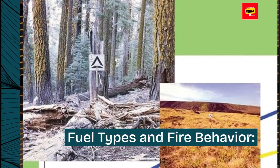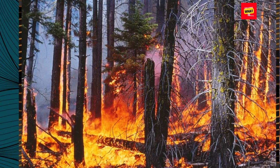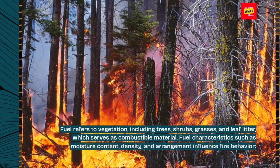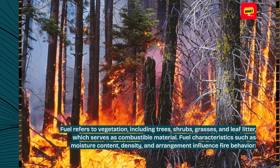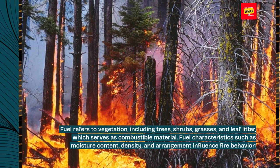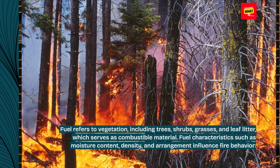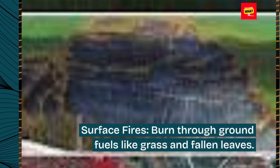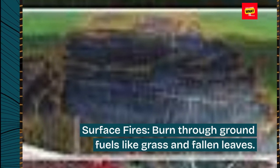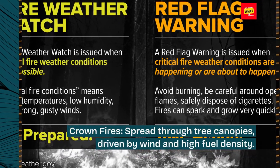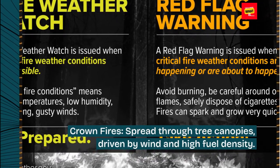Fuel Types and Fire Behavior: Fuel refers to vegetation, including trees, shrubs, grasses, and leaf litter, which serves as combustible material. Fuel characteristics such as moisture content, density, and arrangement influence fire behavior. Surface fires burn through ground fuels like grass and fallen leaves, while crown fires spread through tree canopies, driven by wind and high fuel density.